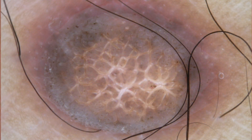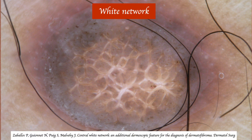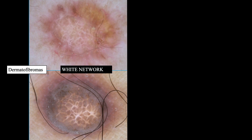Returning to the typical pattern, instead of the white scar-like patch, we can observe this structure which has been called white network. This structure is composed of white lines and brown holes and is considered a variation of the classic white scar-like patch because the histopathologic correlation is similar.